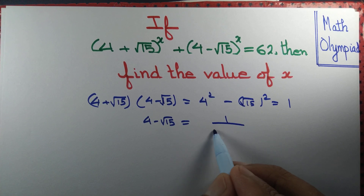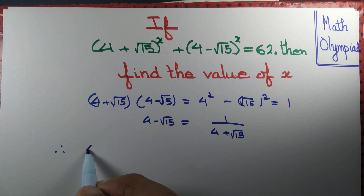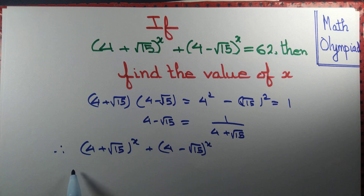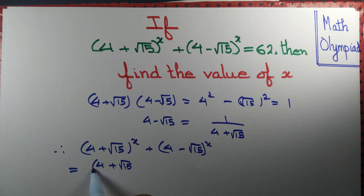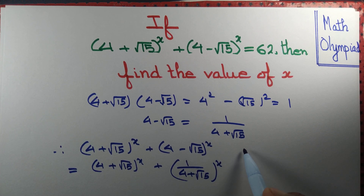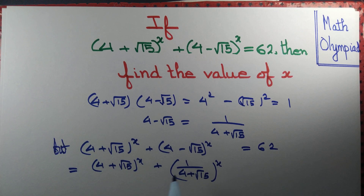So we can write 4 − √15 = 1/(4 + √15). This might help. Therefore (4 + √15)^x + (4 − √15)^x can be written as (4 + √15)^x + 1/(4 + √15)^x, and we are given this equals 62.